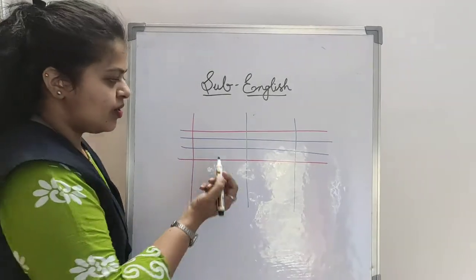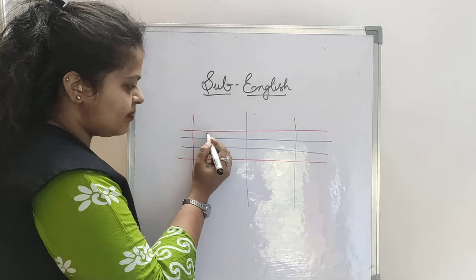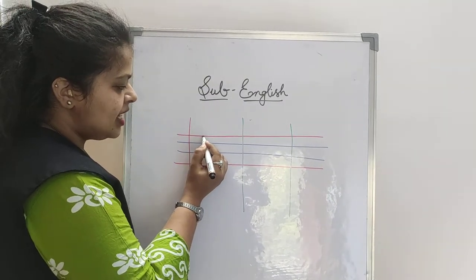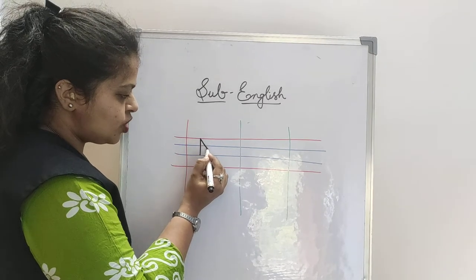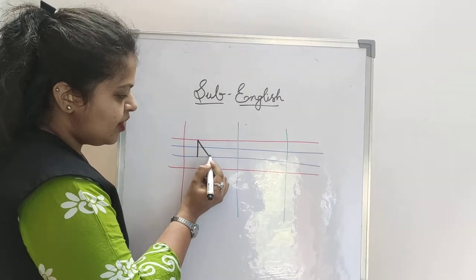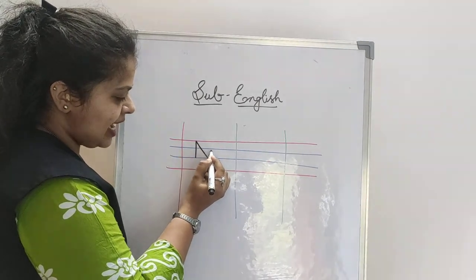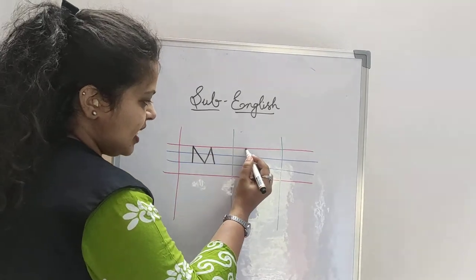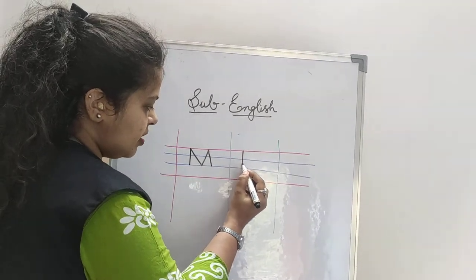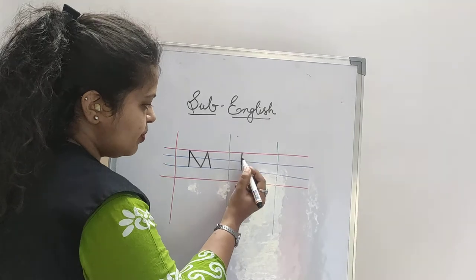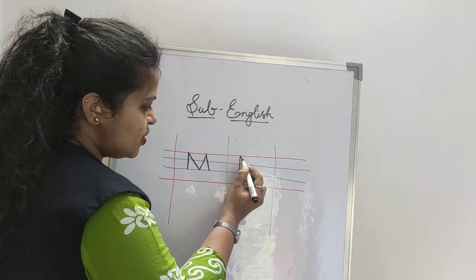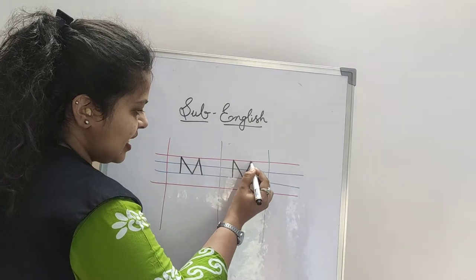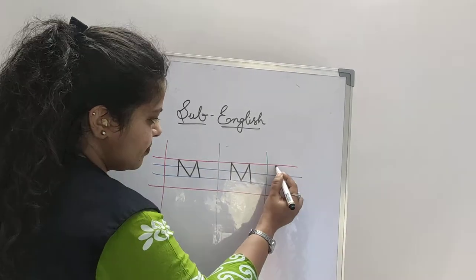Let's start, children. How to write the letter M. Draw the standing line from the top red line to the bottom blue line. Draw the left slanting line from the top red line to the bottom blue line. Then go up with the right slanting line and the standing line. Once again: standing line from the top red line to the blue line, then the left slanting line, go up with the right slanting line, and draw the standing line.